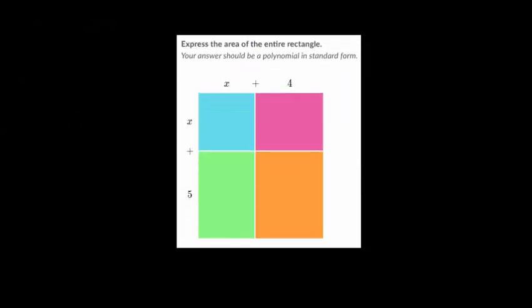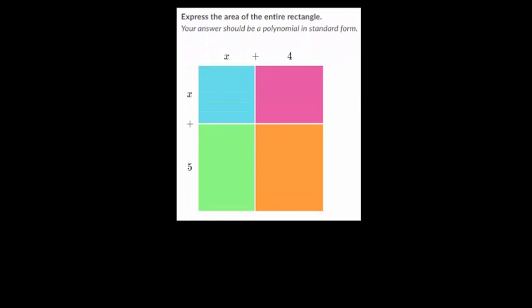And we'll do one more of these. So we have x times x, again, that's x squared, 4 times x, so 4x. x times 5, which is 5x. And 4 times 5, which is 20. So our total answer, we add them all together. We get x squared plus 4x and 5 more would be 9x plus 20.